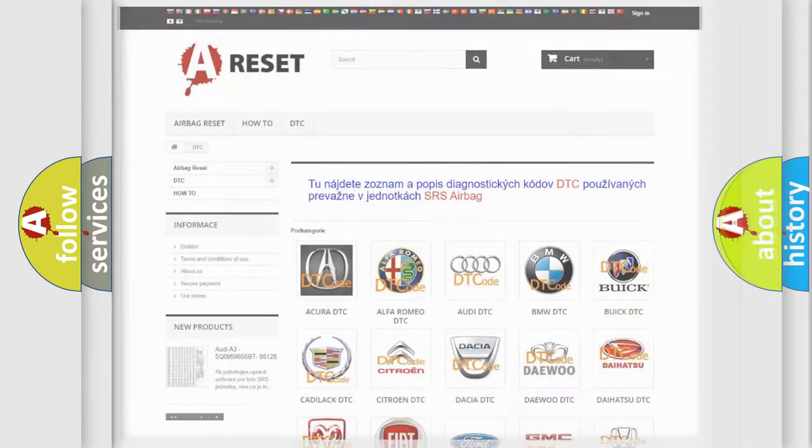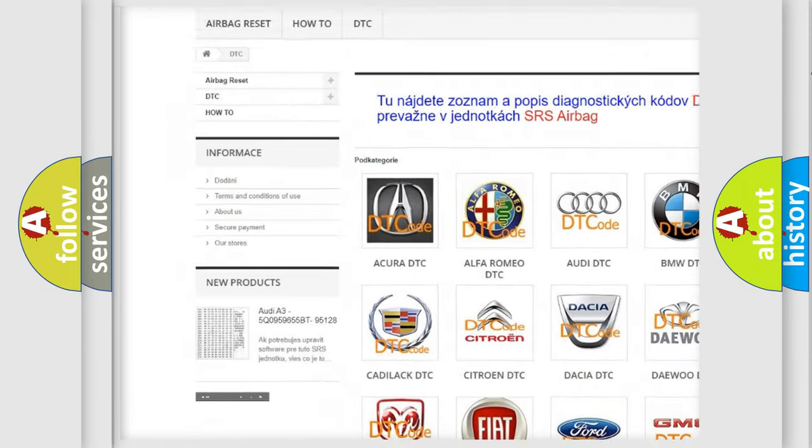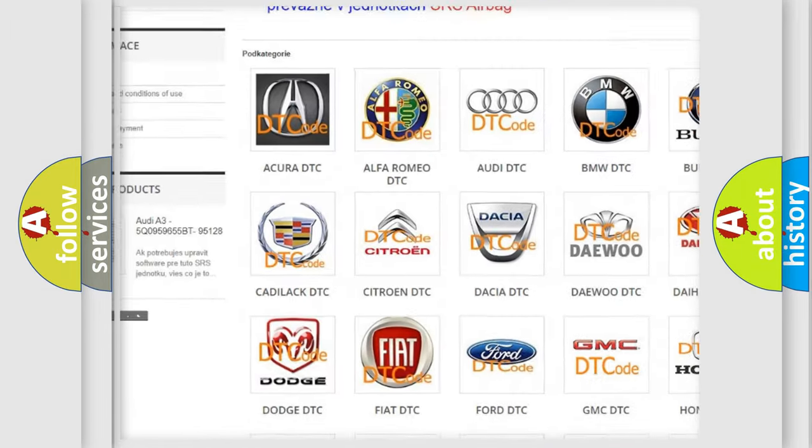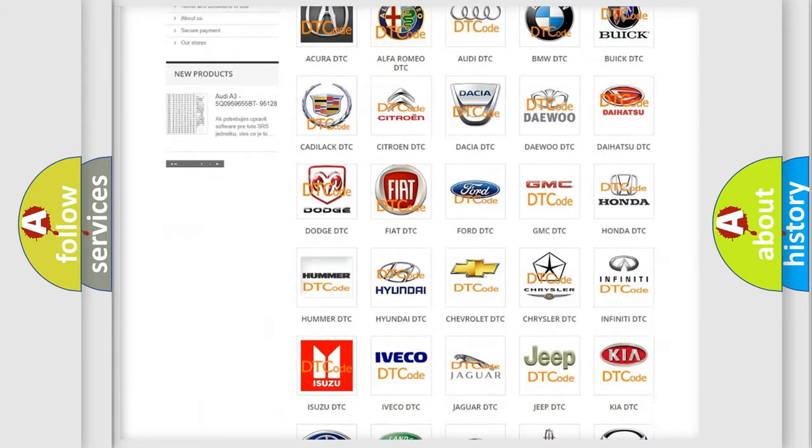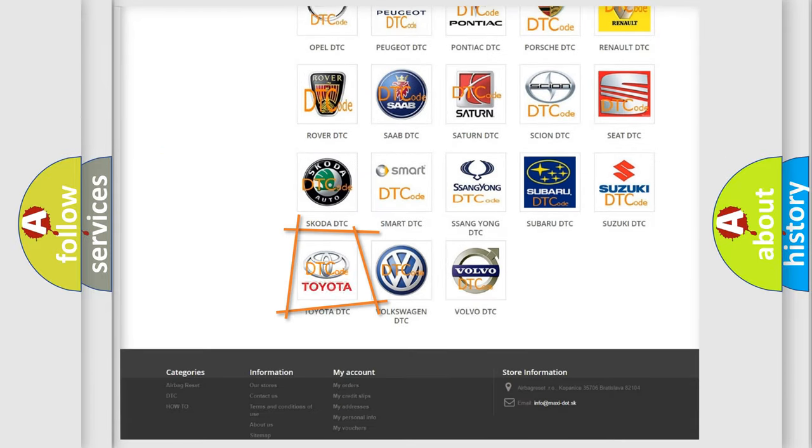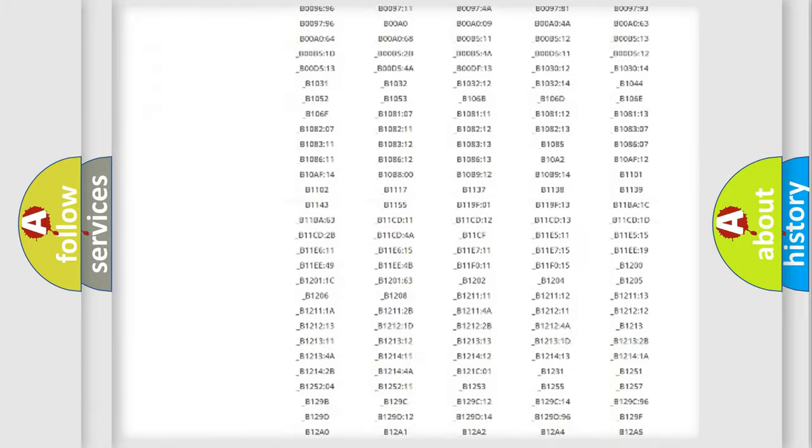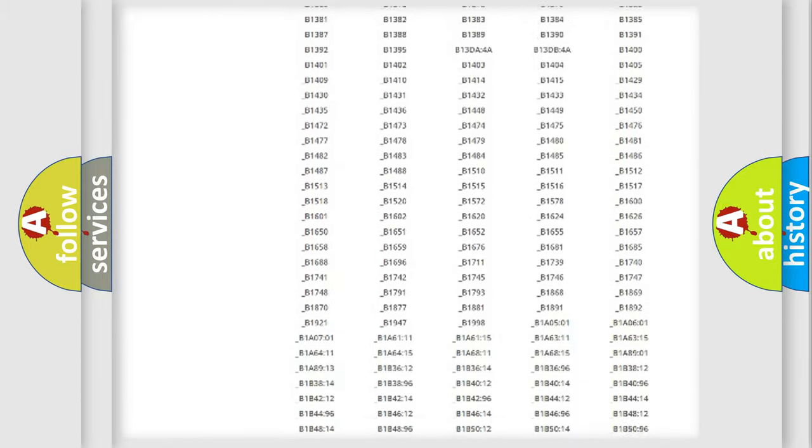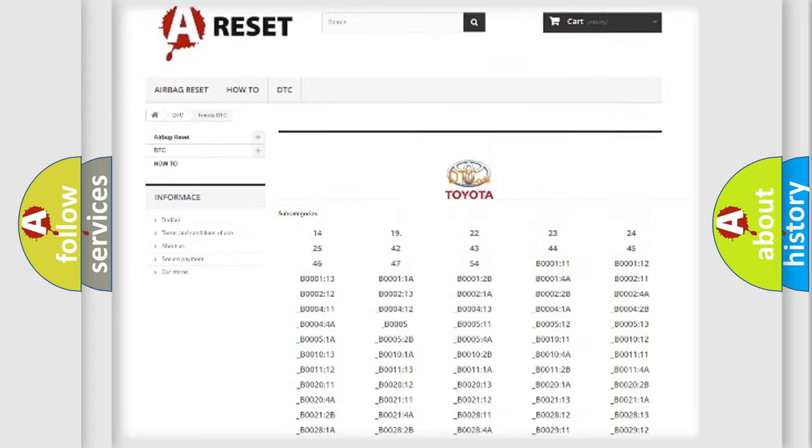Our website airbagreset.sk produces useful videos for you. You do not have to go through the OBD2 protocol anymore to know how to troubleshoot any car breakdown. You will find all the diagnostic codes that can be diagnosed in Toyota vehicles.